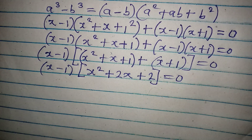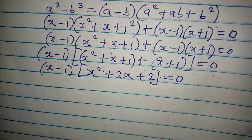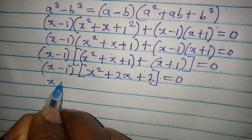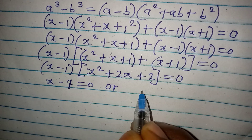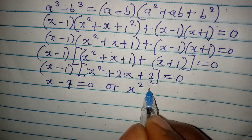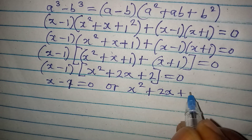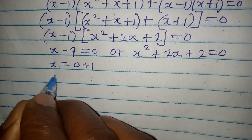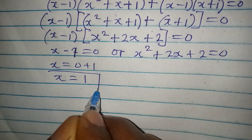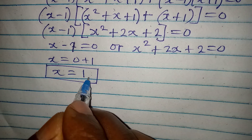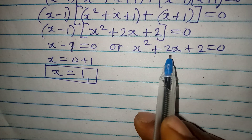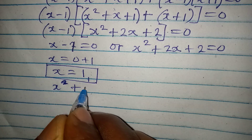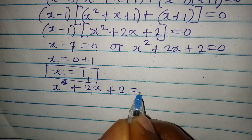To solve this, we apply the zero product rule, so that x minus 1 equals 0, or x squared plus 2x plus 2 equals 0. From the first factor, x equals 0 plus 1, so x equals 1. This is the value of x from the linear factor — our first solution and the only real solution. Now we're going to pick the quadratic and deal with it: x squared plus 2x plus 2 equals 0.